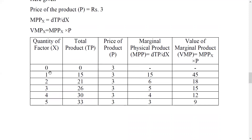Total product starts at 0; the first unit gives 15, so MPP = 15. The second unit raises total product to 21, so MPP = 6. The next gives 26, so MPP = 5. Then 30, MPP = 4, and 33, MPP = 3. The value of marginal physical productivity of X = MPP × Price: 15 × 3 = 45; 6 × 3 = 18; 5 × 3 = 15; 4 × 3 = 12; 3 × 3 = 9.